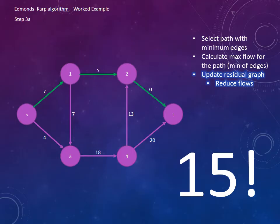Now we need to update the residual graph. S to 1 is reduced from 22 to 7, 1 to 2 from 20 to 5, and 2 to the sink goes from 15 to 0.